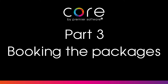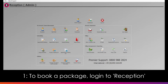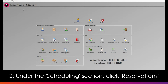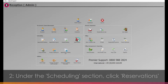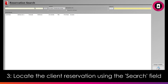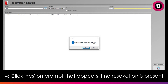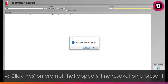Part 3 – Booking the Packages. To place a package booking or reservation, log in to Reception. Head to the Scheduling section and then click Reservations. Next, locate the client who wishes to place the package booking using the search function and magnifying glass button at the top. Highlight the client if they have already placed a reservation, otherwise a prompt will appear that no reservations were found and it will ask you to create a new one. Click Yes.